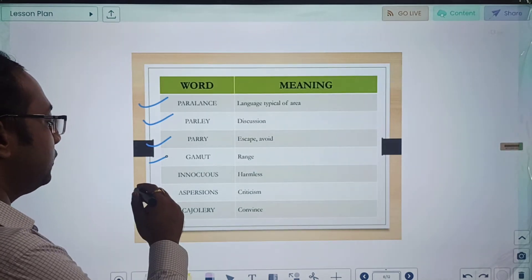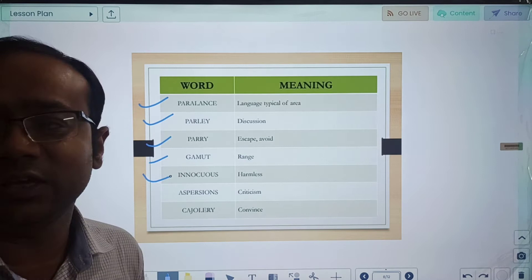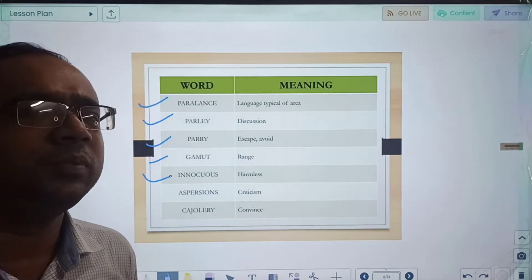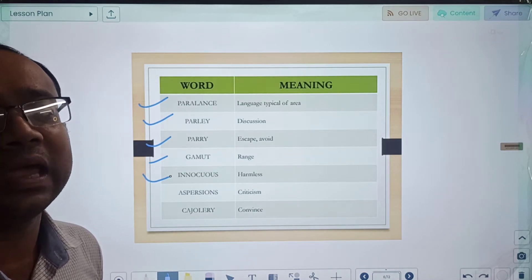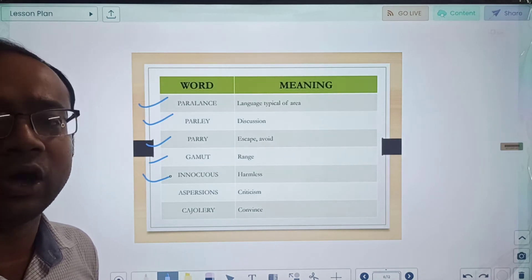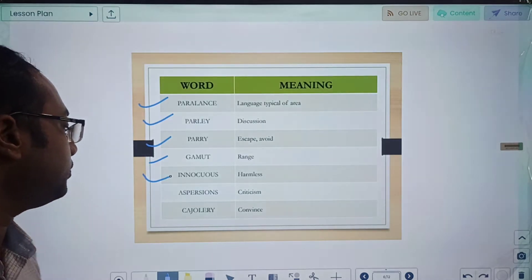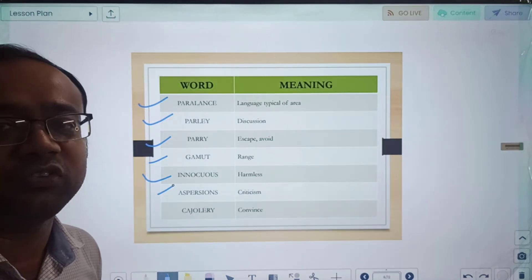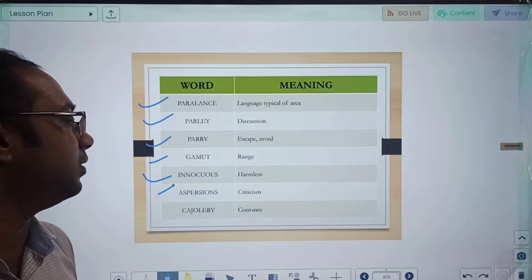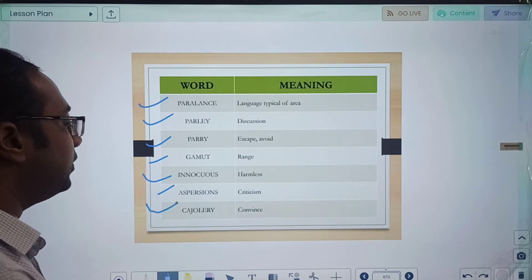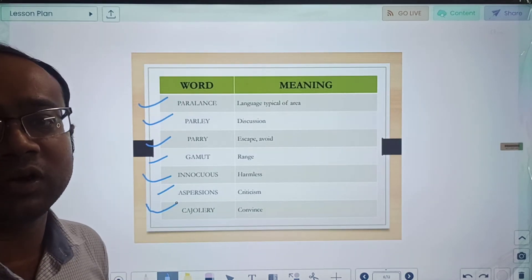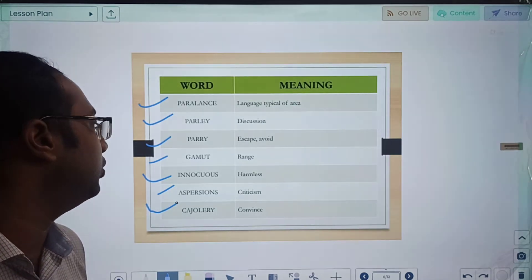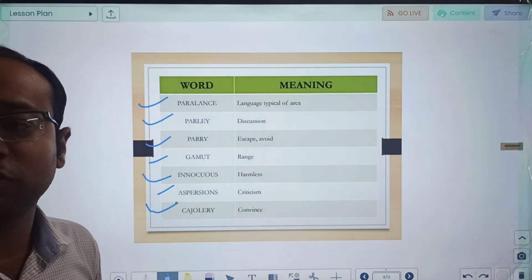Innocuous means harmless, something which will not do any harm to you. Aspersions means criticism. Casuistry basically means convince to, when you want to convince someone. So this was our first seven set of words: parlance, parley, parry, gamut, innocuous, aspersions, casuistry.